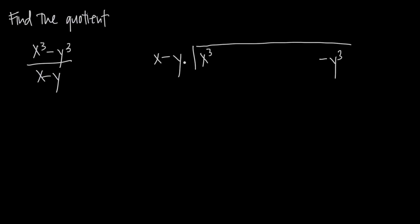Now we just proceed as usual. We figure out what we have to multiply by x to get x cubed — that's x squared, because x times x squared gives us x cubed. So we have x squared. Now we take x squared and multiply through by the entire divisor: x squared times x gives us x cubed, and x squared times negative y gives us negative x squared y.